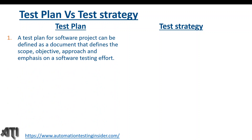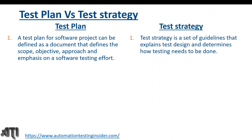A test plan for a software project can be defined as a document that defines the scope, objective, approach, and emphasis on a software testing effort. For smaller projects, test strategy is a part of the test plan. Whereas a test strategy is a set of guidelines that explains test design — what techniques we are going to use to design the test cases — and determines how testing needs to be done.